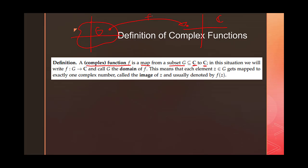Just like back in calculus, we call the set of inputs the domain. One note about domain: in complex analysis we still cannot divide by zero — that's still a no-no. Now that we have i, we can sort of relax our square root rules, but we still have to be a little bit careful, which we'll get into later. We call our inputs the domain, and the outputs we call the image. So Z is our input, F of Z is our output — very similar to what we had in calculus with real functions.